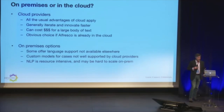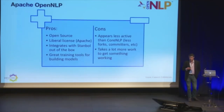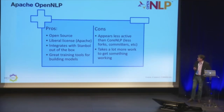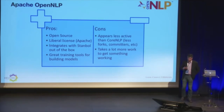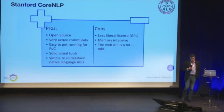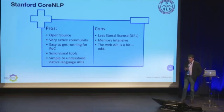If we go with cloud providers, all the usual advantages apply: pay as you go, they generally iterate faster, and obvious choice if you're already in the cloud. On-prem has advantages too — custom models and language support you might not get from cloud tools. The first I looked at was Apache OpenNLP: open source, liberal license. If you're using Stanbol, this can be a great way to get started, but it's not as active as some other open source communities and takes a lot of work. Stanford has a terrific set of tools, also open source, not quite as liberal a license, easy to get running for a POC, but a little bit of an odd web API, so be prepared for that.